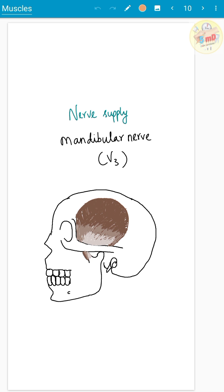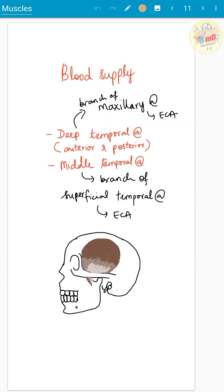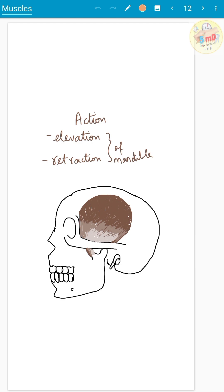The nerve supply is from the mandibular nerve, which is a branch of the trigeminal nerve. Blood supply is from both the deep temporal artery — anterior and posterior branches — and the middle temporal artery. The deep temporal artery is a branch of the maxillary artery, and the middle temporal artery is a branch of the superficial temporal artery, both ultimately branches of the external carotid artery. The action is elevation and retraction of the mandible.